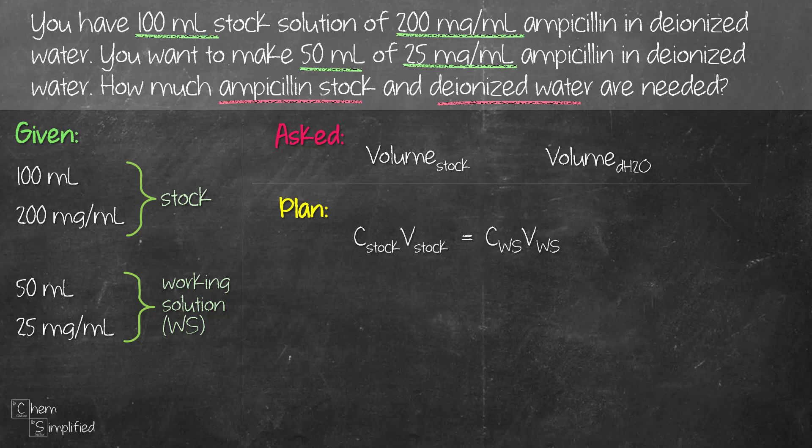So we have all this data. The concentration C stock, which is the concentration for our stock solution, that's 200 mg per ml. Volume of stock, we don't know because that is exactly what the question is asking us to find. We're given that we have 100 ml total but we don't know out of the 100 ml total how much are we going to use. So we actually do not have the volume of stock. And then the concentration of our working solution, we do have that info, that's the 25 mg per ml. And then the volume for working solution, that's the 50 ml that we're asked to make.